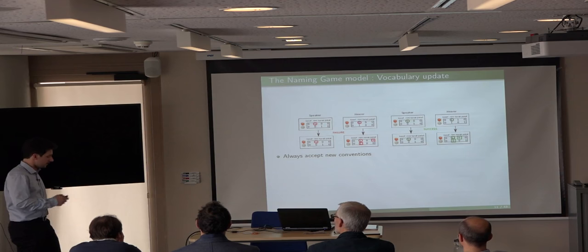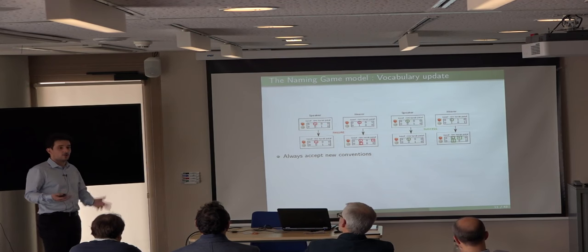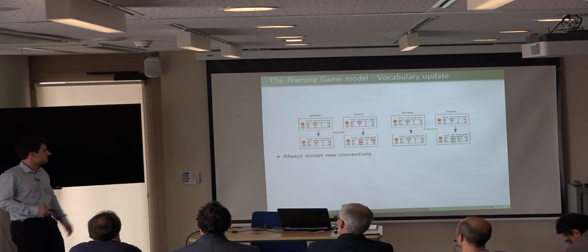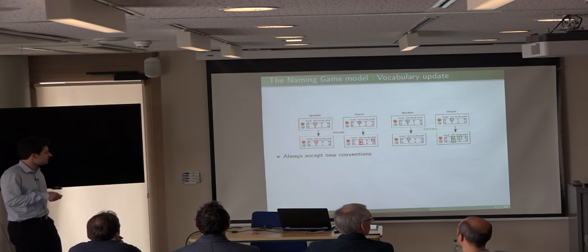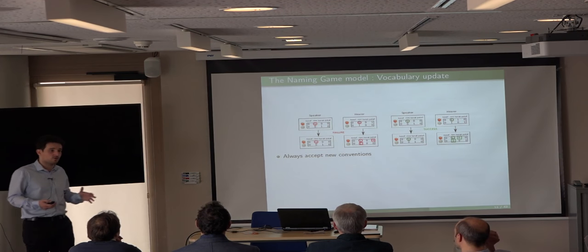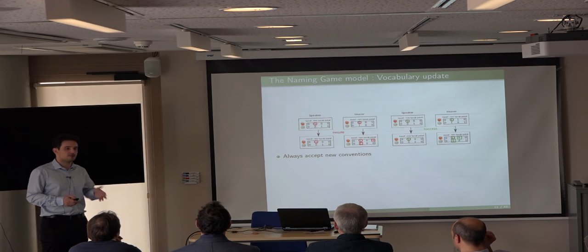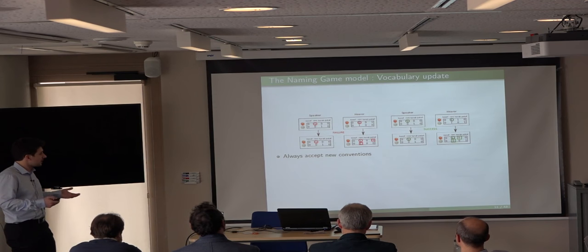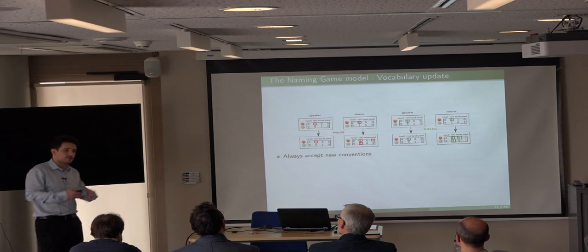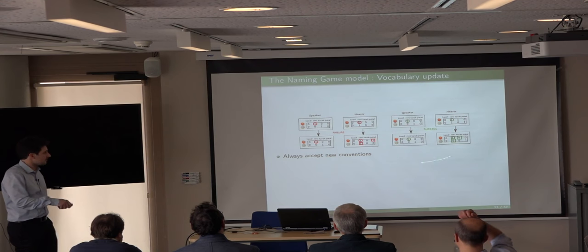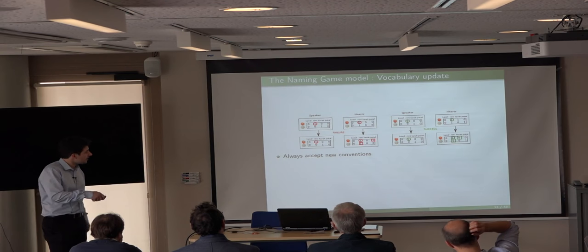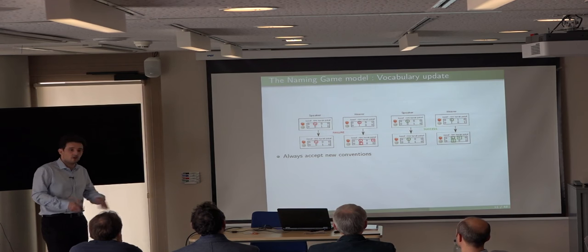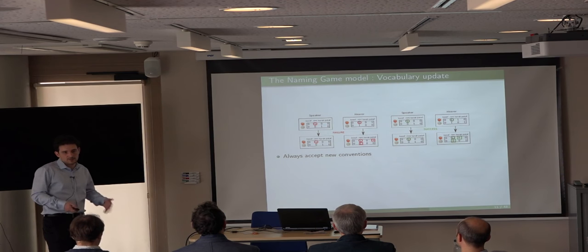These conditions determine how you update your lexicon based on what happened during the interaction. Basically, you always accept what the other told you — you never distrust them. But if you do that, your vocabulary grows and grows. The control mechanism is that you remove synonyms and homonyms when you have a successful interaction: 'we agreed on this, so let's consider the homonyms and synonyms no longer valid.'